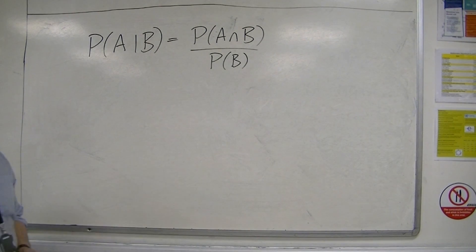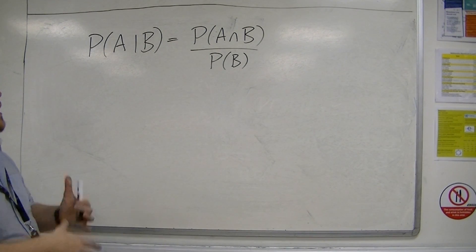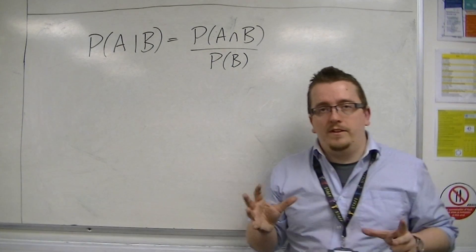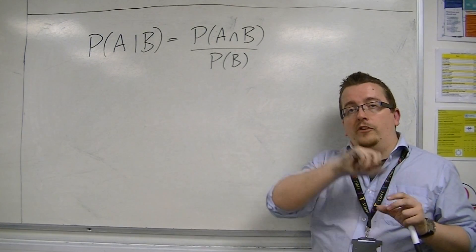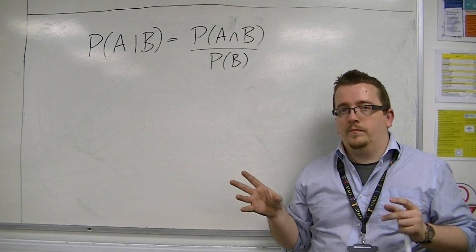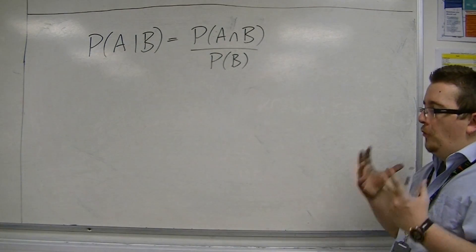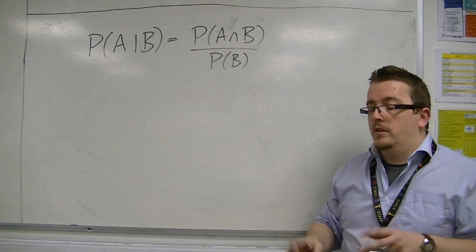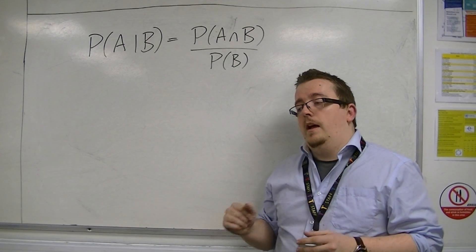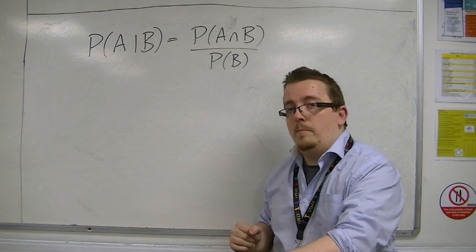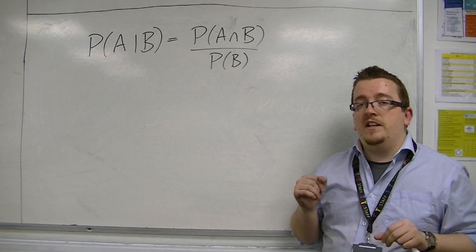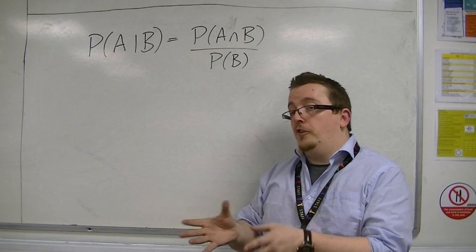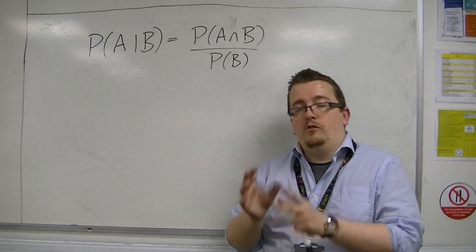What I want to talk about now is what if A and B are independent. Two events are called independent if one does not affect the other. For example, if I have two events such as flipping a coin and drawing a king from a pack of cards, the two events are independent. Whether I get a heads or a tails on the flip of the coin will not affect the probability of me getting a king from a pack of cards.